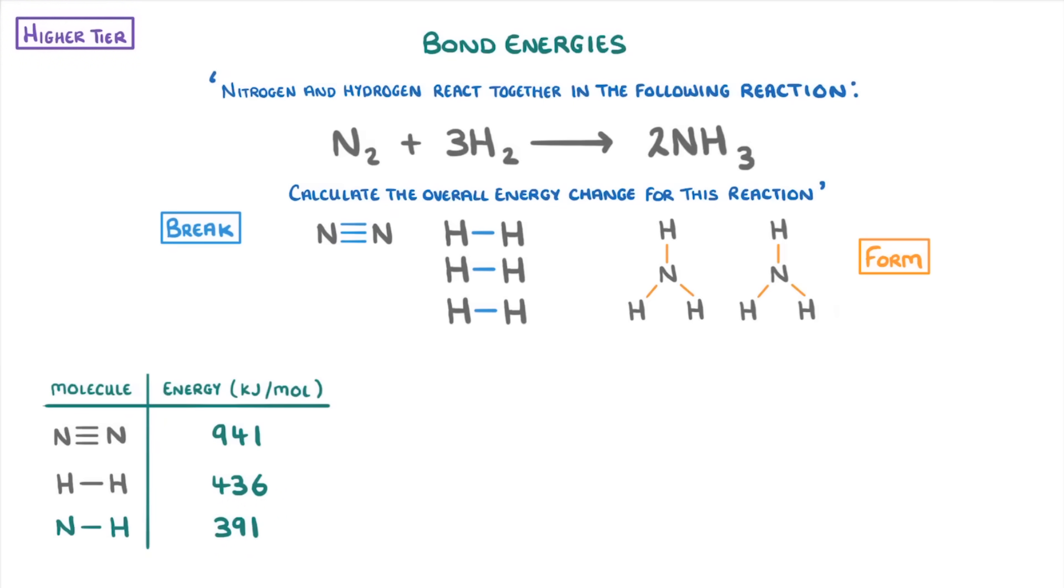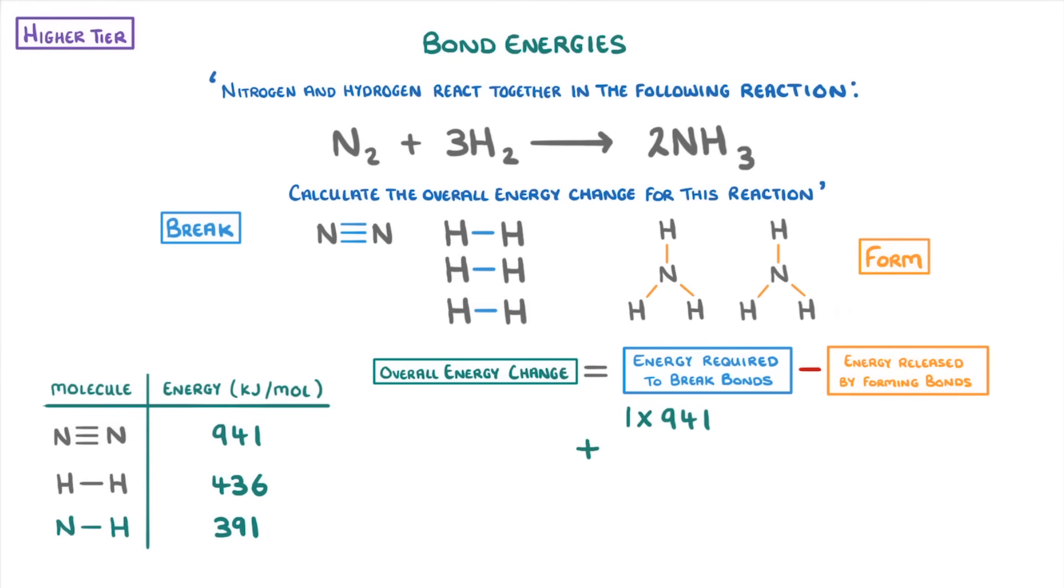So if we recall our equation, which stated that the overall energy change equals the energy required to break bonds minus the energy released by forming bonds, we can just plug in our numbers. So, 1 times 941, plus 3 times 436, which we can put in one big bracket, minus 6 times 391, which simplifies to 2330 minus 2346.